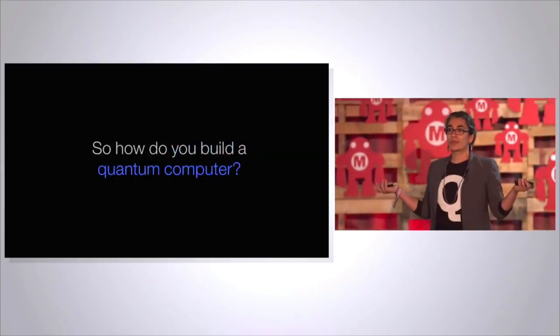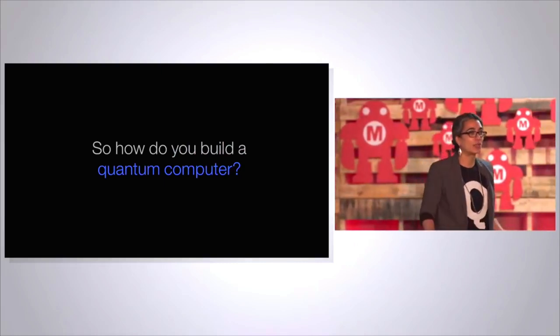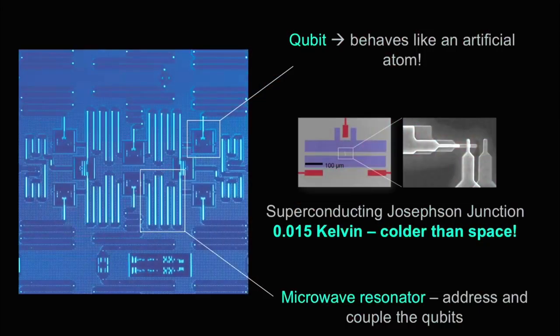So how do you actually build a quantum computer? This is how it should work theoretically. How do you actually go and do this in real life? So first of all, you have to have qubits that work in such a way that you can harness quantum mechanics. So we build basically artificial atoms.